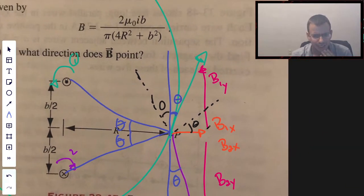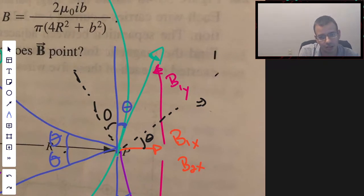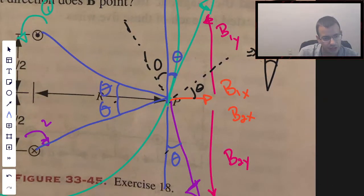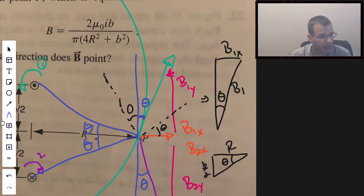I'm going to redraw the relevant portion of this triangle right here. This right here is going to be B1x, that's what we're concerned about. This is going to be B1, and this will be theta. We're going to be using the similar triangle where we have R, B over 2, and theta.